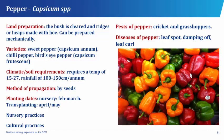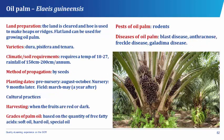The oil palm, which has its botanical name as Elaeis guineensis, belongs to the plant family Palmae. On a commercial basis, both the oil and the kernel are important. The oil is obtained from the mesocarp and the kernel from the endocarp. The fruit is called a drupe. In preparing the oil palm for planting, the land is cleared and a hoe is used to make heaps or ridges. Flatland can be used for growing oil palm.